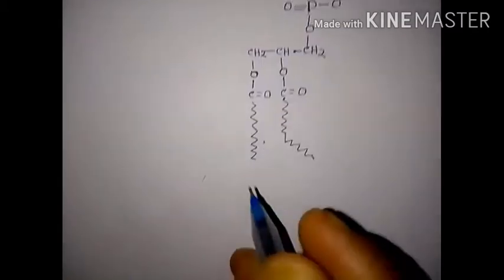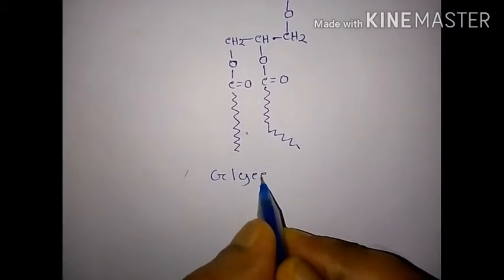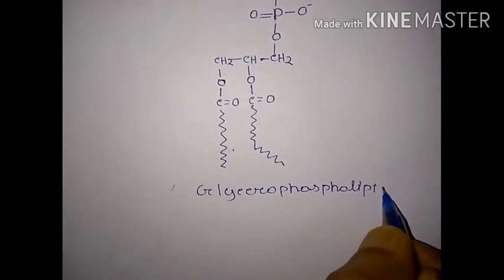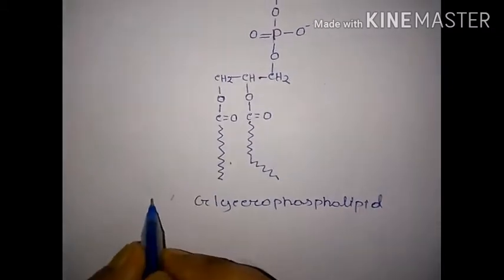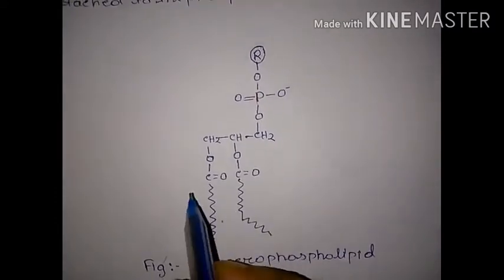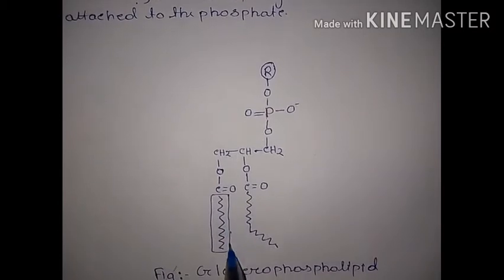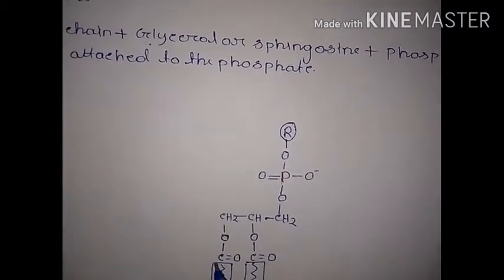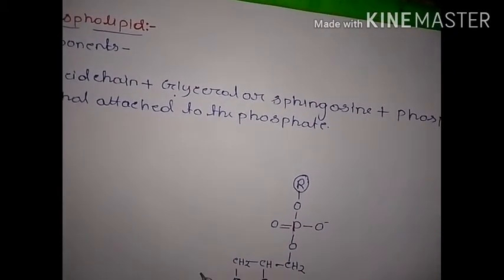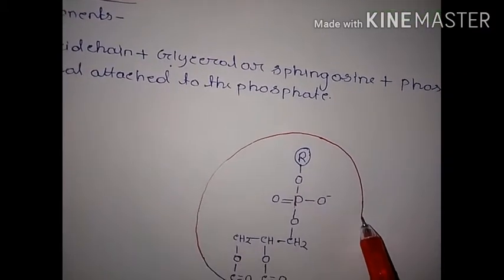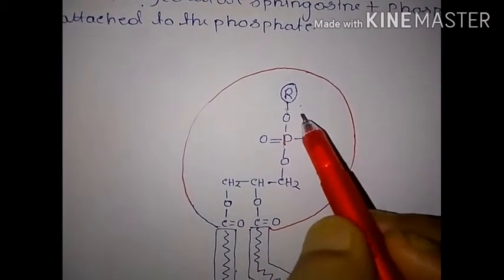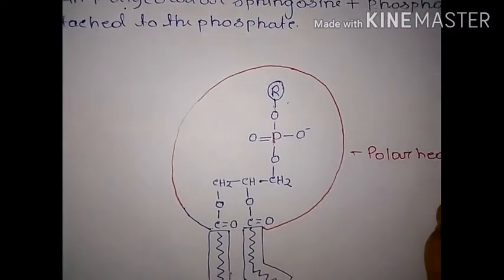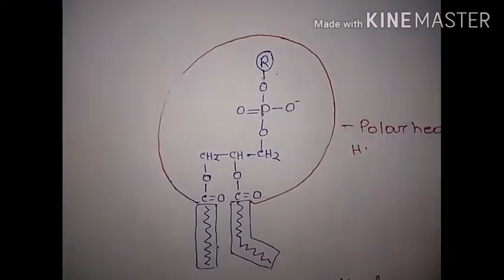This is the basic structure of the glycerophospholipid, also called phosphoglyceride. This is the tail portion, which is the hydrophobic fatty acid chain. In the head portion we have the phosphate, glycerol, and the alcohol which is attached to the phosphate, forming the polar head — this is a polar or hydrophilic head region.